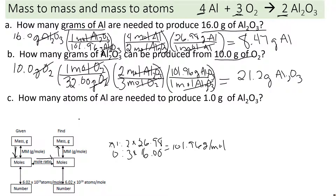Let me summarize what we're doing. We start with our given: the number, unit, and compound. Then we divide by the given compound's molar mass — that's step one. Step two is the mole ratio, which comes from the balanced reaction: the given goes on the bottom, the find goes on the top. The last step is to multiply by the molar mass of the find compound. Those are the steps you'll always follow in a mass-to-mass problem.